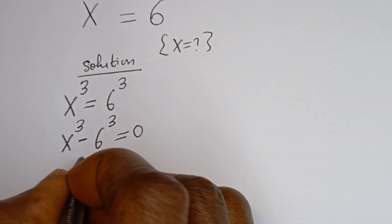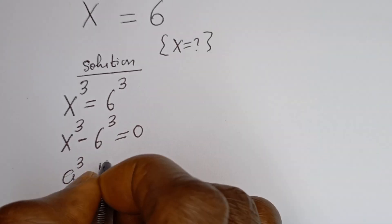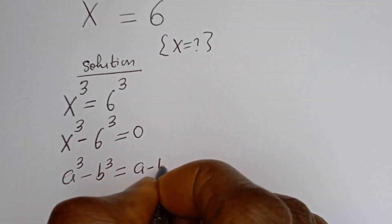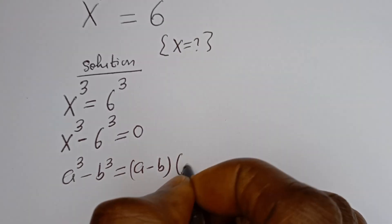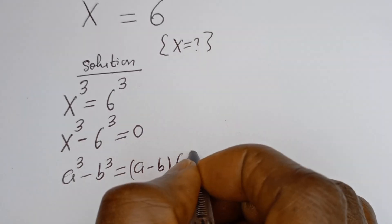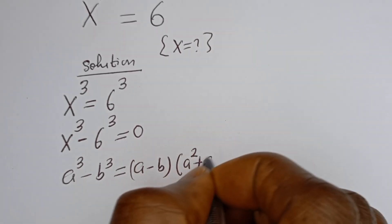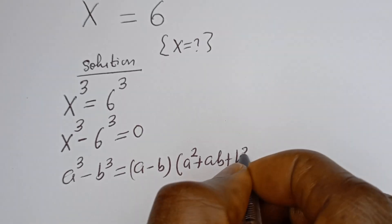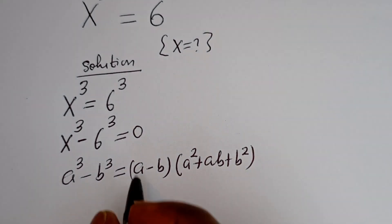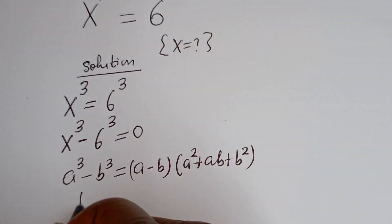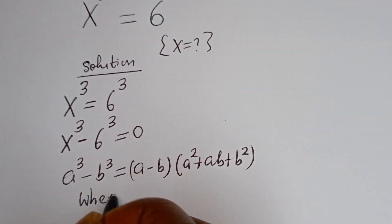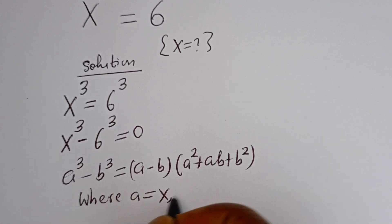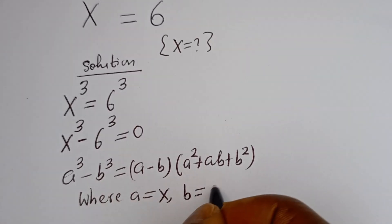Take note of this: if you have a to the power of 3 minus b to the power of 3, this is equal to (a minus b) bracket (a squared plus ab plus b squared).